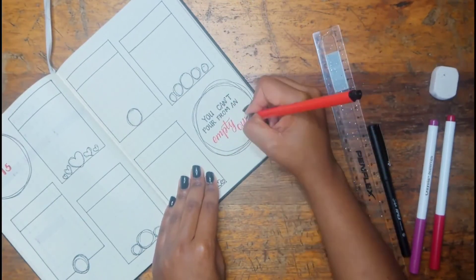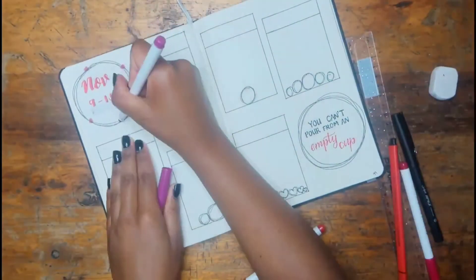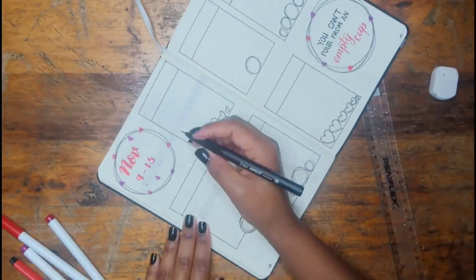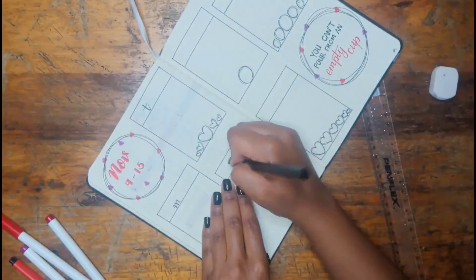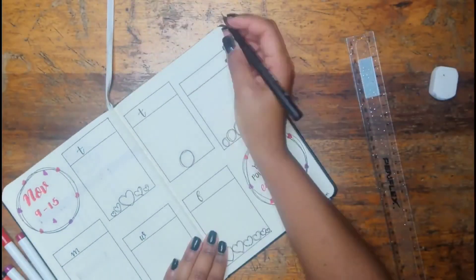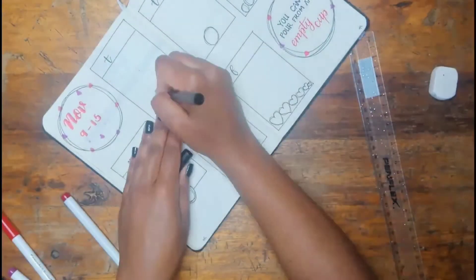This one says 'You can't pour from an empty cup,' which reiterates what I was just saying, that when I take care of myself I am able to take much better care of my loved ones. I really like this weekly. I actually can't wait for the second week of November because I'll be staring at this quote for a whole week and this is my favorite spread.